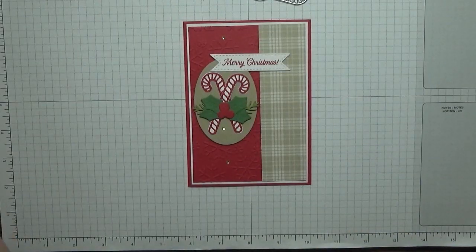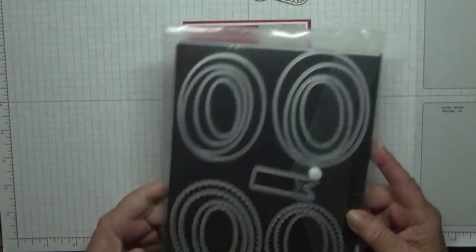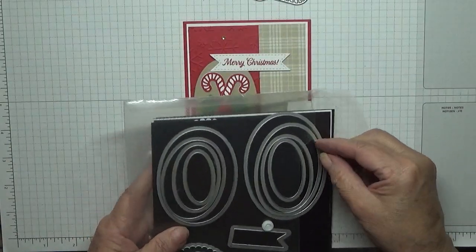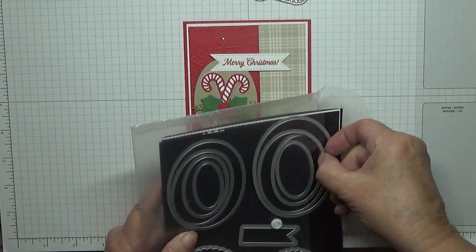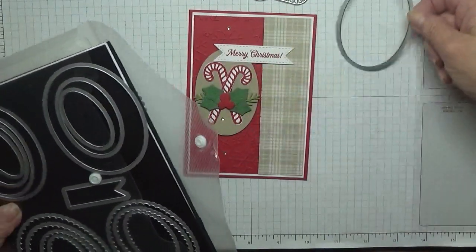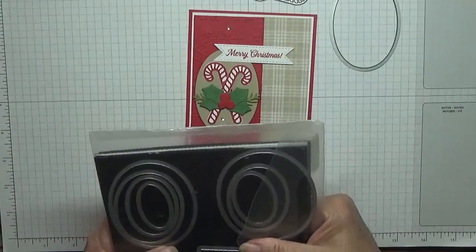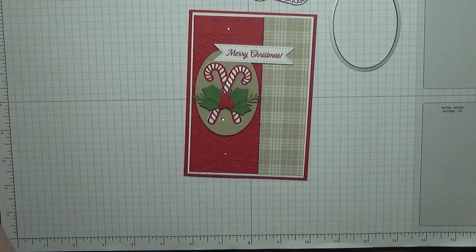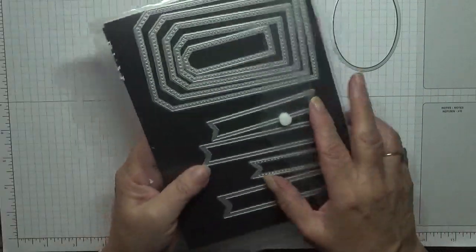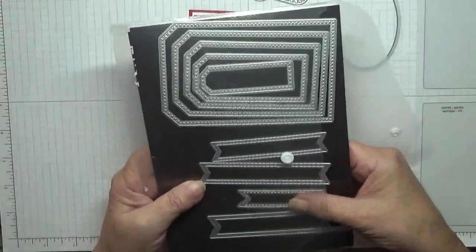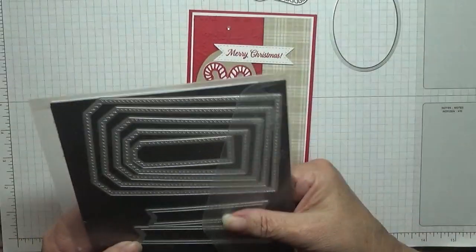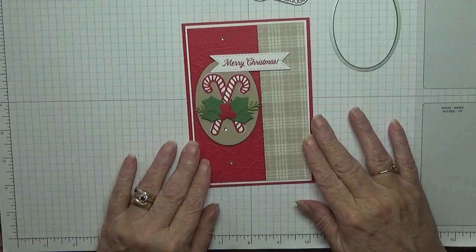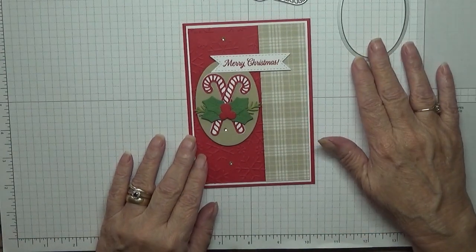I'm also using the ovals layering dies and I've got to cut out this oval. I've also used just some dies of my own and these are just label dies. You obviously can use whatever label dies you want, that's the one I'm choosing to use.